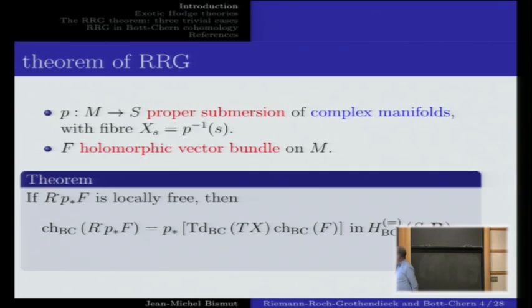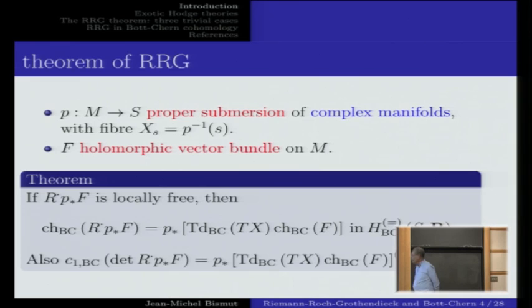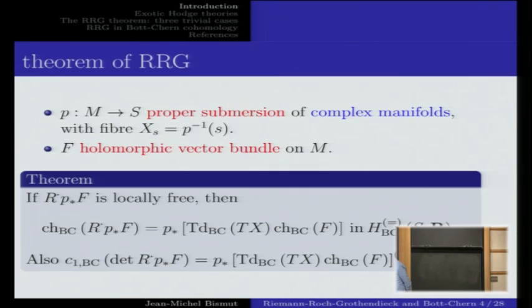A brief comment on the locally freeness assumption. In general, on arbitrary complex manifolds, there is currently no good definition of the Chern character for a coherent sheaf. The direct image by Grauert's theorem is known to be a coherent sheaf, but we lack a good definition for its Chern character. That is why we need to assume the direct image is locally free for the left-hand side to make sense. A refinement: without any assumption, the first Chern class of the determinant bundle — which is a line bundle — gives an equality that holds in full generality, without algebraicity or projectivity assumptions on M and S.